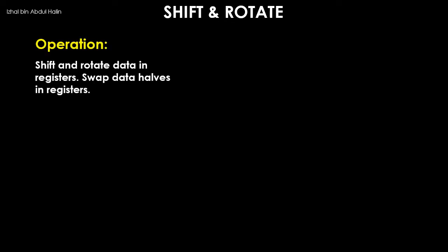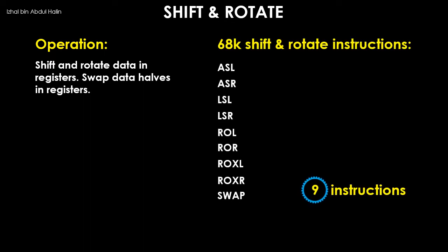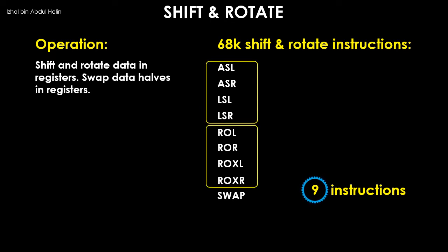My name is Ishul Abdul Halane. Welcome to my video on the 68k instructions. This is the fourth part from a six-part series that will explain the instructions available for programming the 68k microprocessor. Now let's begin with the shift and rotate instructions. The instructions in the shift and rotate group are used to shift and rotate data in registers, and also to swap data halves in registers. There are nine instructions altogether in this group — the first group for shifting data, and the second for rotating data.